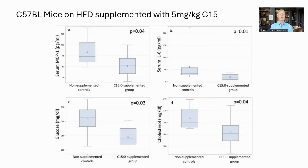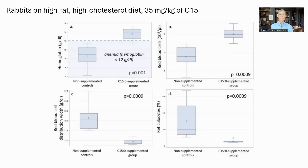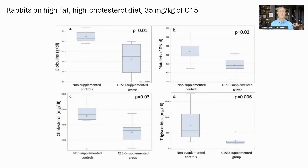Looking at in vivo preclinical studies: one graph comes from a study using C57-BL mice fed a high-fat diet, with a control group and a group supplemented with C15 at 5 mg/kg. Serum markers of inflammation — MCP1 and interleukin-6 — as well as glucose and cholesterol, were lower in the C15 group. A second trial with rabbits fed a high-fat, high-cholesterol diet showed that supplementation with C15 at 35 mg/kg improved red blood cell count and quality, and reduced cholesterol and triglycerides.